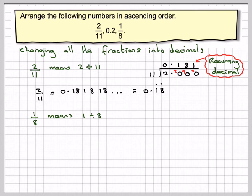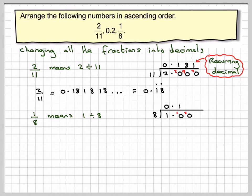1 eighth means 1 divided by 8. 8 into 1 goes 0, put in the decimal point. 8 into 10 goes 1 time, remainder 2. 8 into 20 goes 2 times, remainder 4. 8 into 40 goes 5 times, so it's 0.125. So 1 eighth is 0.125.